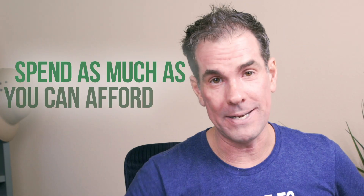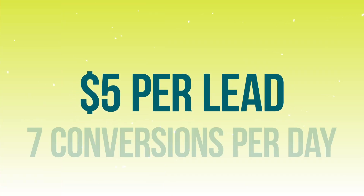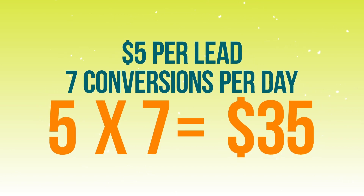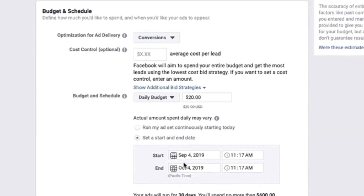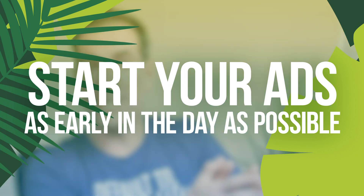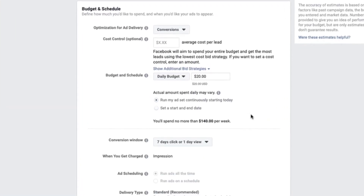Everybody wants to know how much they should spend on ads to see results. The easy answer is spend as much as you can afford — I recommend at least $10 a day. If you're more advanced and know your cost per lead, Facebook's algorithm wants to see about 50 conversions a week, roughly seven per day. If your cost per lead is about $5 and you need seven conversions per day, your budget should be about $35 a day. In this example I'll put $20 as my daily budget and choose to run my ad set continuously starting today.